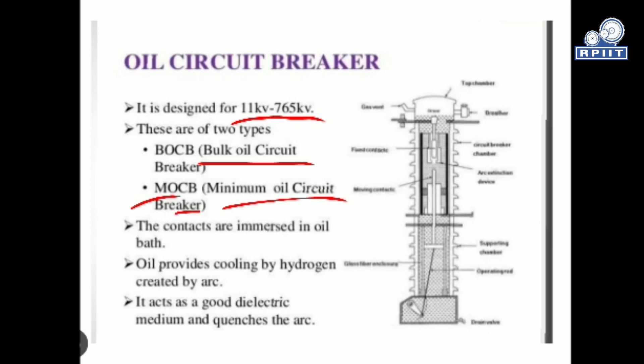In the bulk oil circuit breaker, oil is used in bulk quantity, whereas in the minimum oil circuit breaker, a minimum quantity of oil is used for immersing the contacts. These contacts are immersed in an oil bath. The oil provides cooling by hydrogen created by the arc during arc production whenever the contacts open and close. It also acts as a good dielectric medium and quenches the arc.